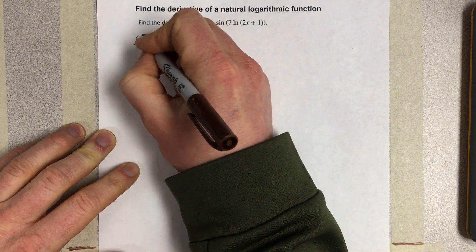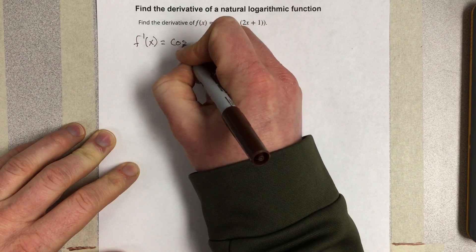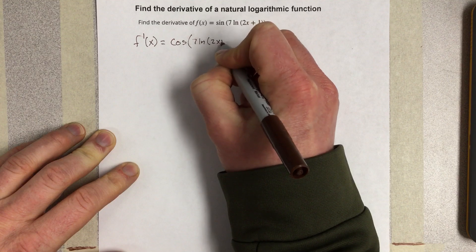So f'(x) is going to equal the derivative of the outside, which would be cos(7*ln(2x+1)),